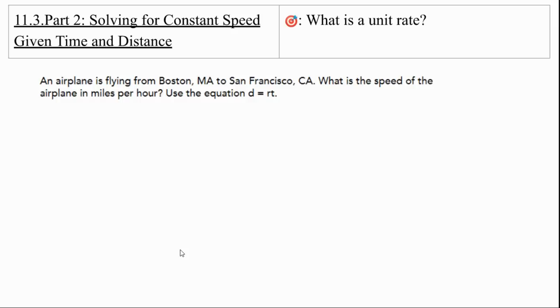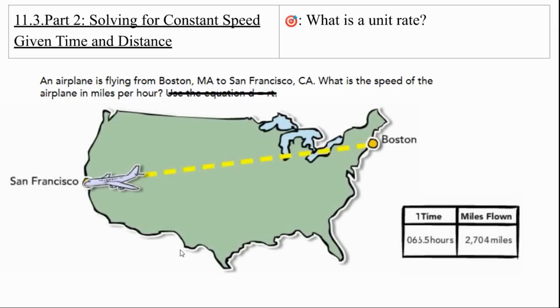Let's take another look at another Part 2 problem. An airplane is flying from Boston, Massachusetts to San Francisco, California. What is the speed of airplane in miles per hour? Oh my goodness. They did it again. Use the equation D equals RT. Nope. Not going to do that. You do not have to use that equation at all.